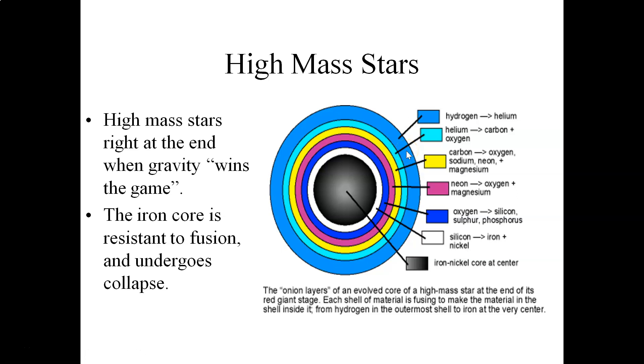You start with the lightest elements out here in the outer atmosphere of the star, hydrogen, underneath that is helium, underneath that is carbon, and so on and so on, all the way down to the iron and also nickel, the iron-nickel core. Because iron is resistant to fusion, this then means that the star reaches the end of its life, and it undergoes final gravitational collapse.